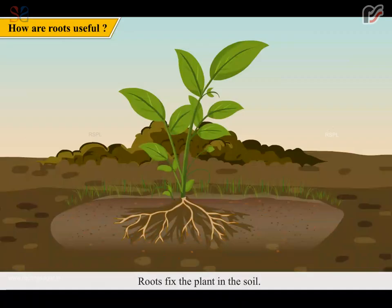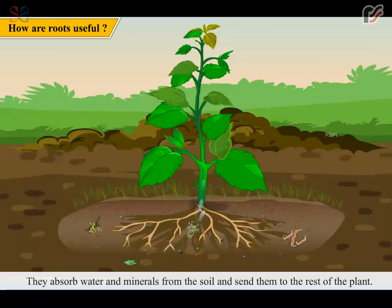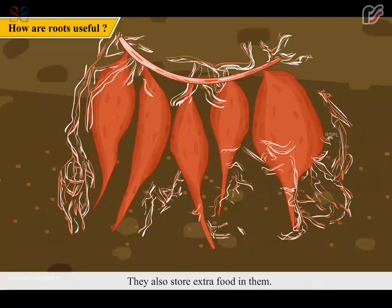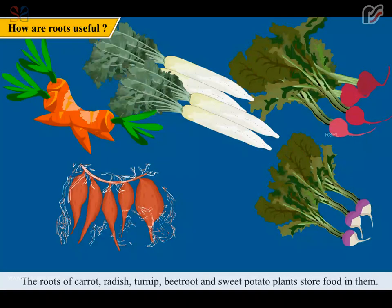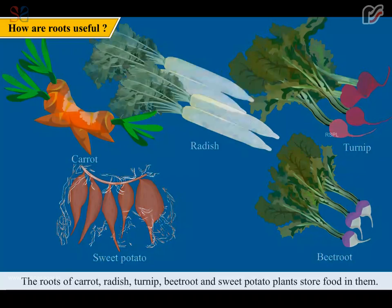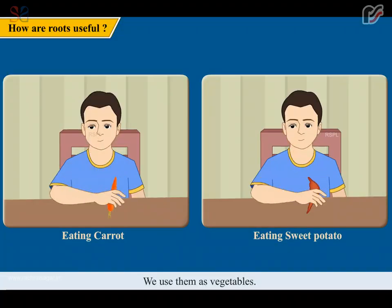Roots fix the plant in the soil. They absorb water and minerals from the soil and send them to the rest of the plant. They also store extra food in them. The roots of carrot, radish, turnip, beetroot and sweet potato plants store food in them. We use them as vegetables.